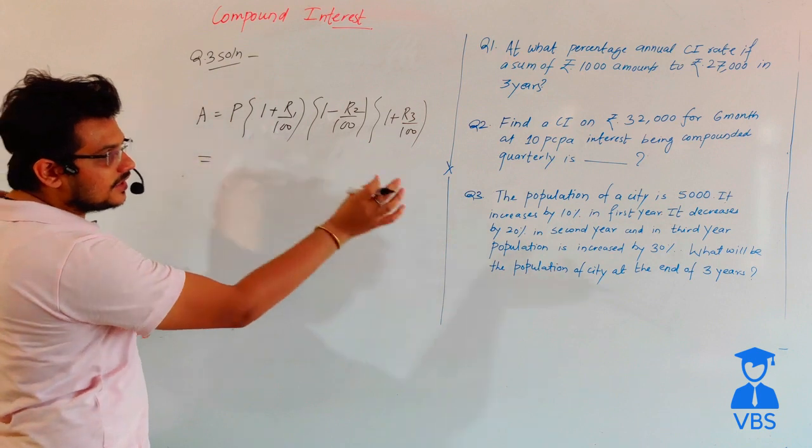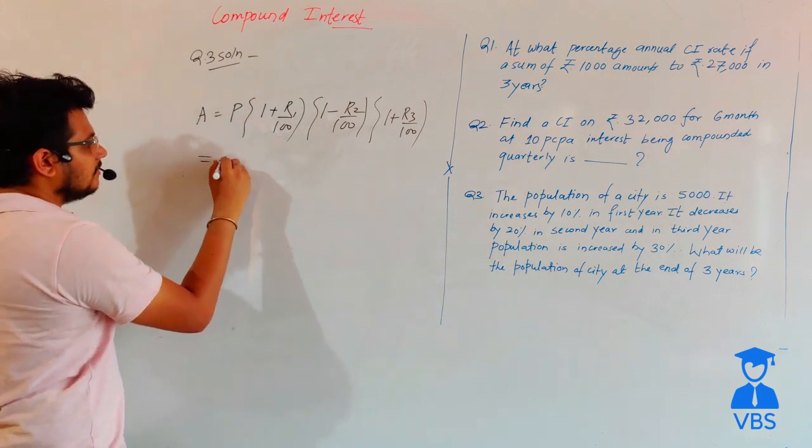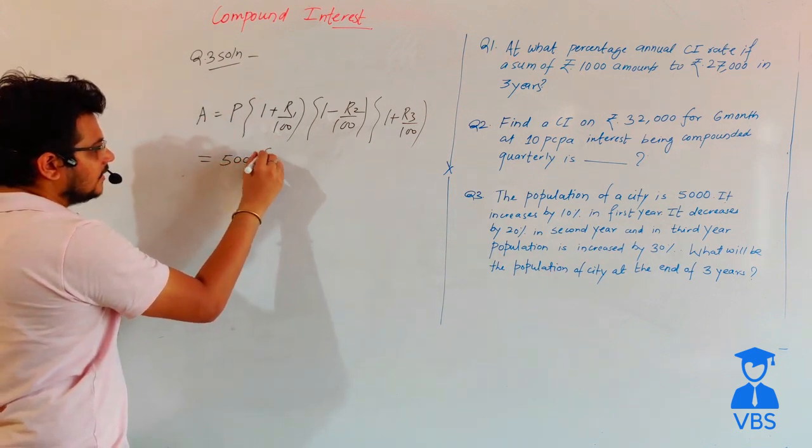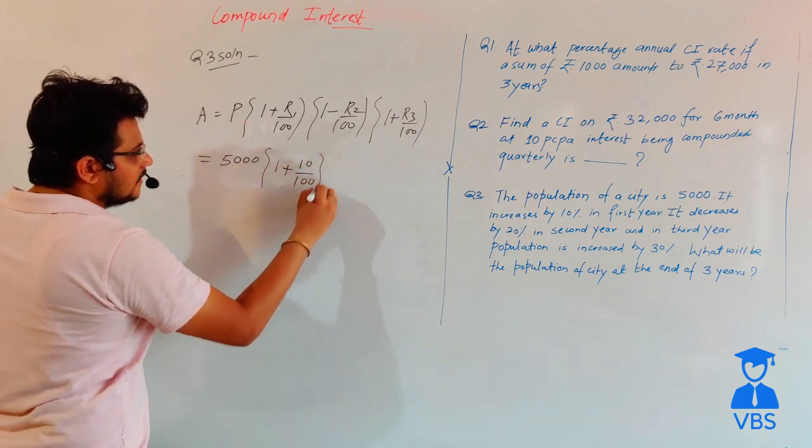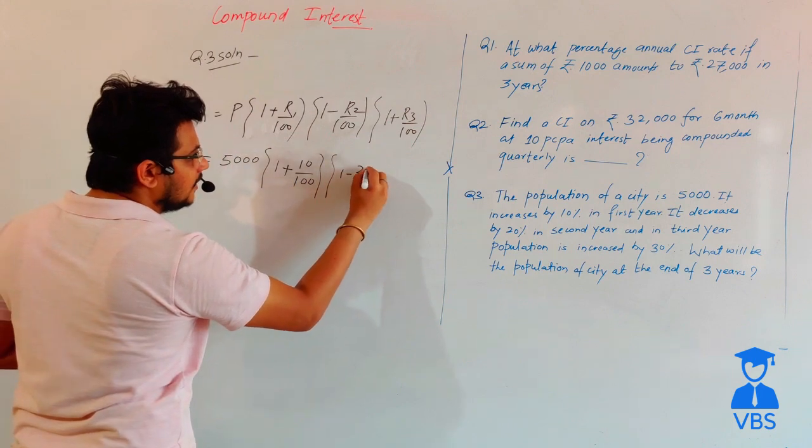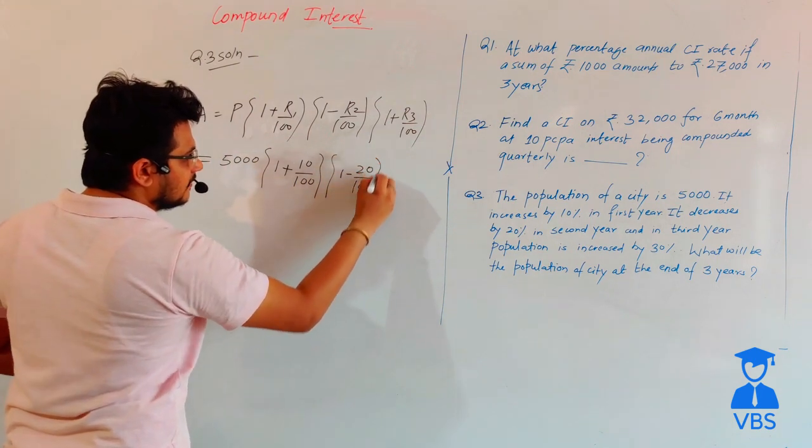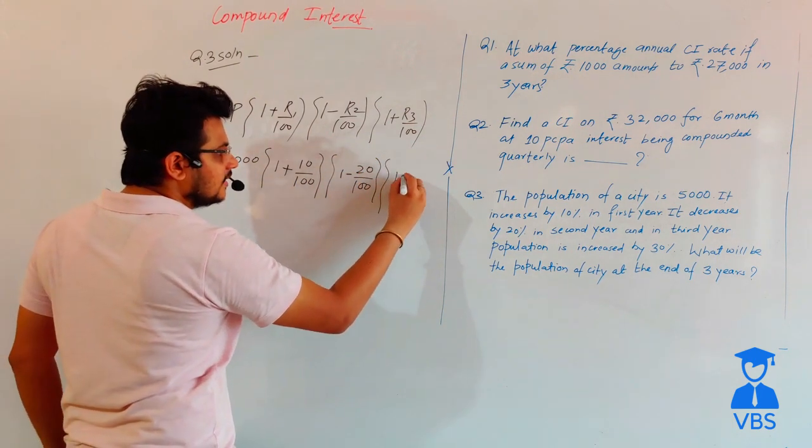The principal amount is the initial population: 5000. The rate for the first year is 10%, the second year decreases by 20%, and the third year increases by 30%.